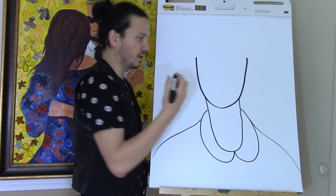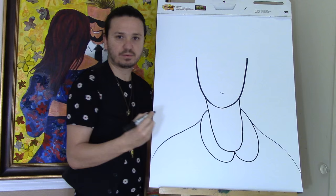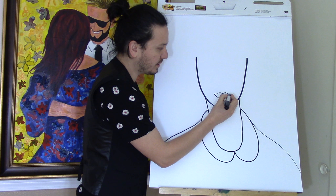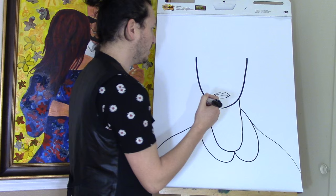Now the next thing we're gonna do are her lips. You start with a tiny little U, one line to the left, one line to the right, connect them with a curved line, then add one in the middle — there we have her lips.